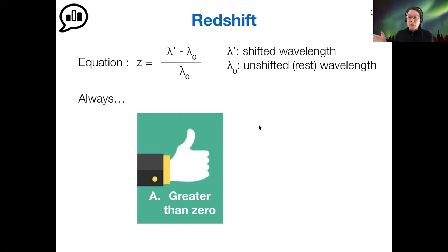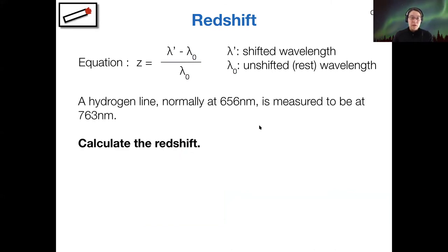This is just the opposite of a blueshift, right? If I had asked you what was true of a blueshift, it would be the opposite answer. Then it would always be shorter wavelength, and so it would be less than zero.